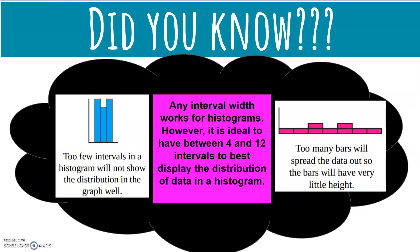Too few intervals in a histogram will not show the distribution in the graph very well. Too many bars will spread the data out so the bars have very little height. Any interval width works for histograms. However, it's ideal to have between 4 and 12 to best display the distribution of data.